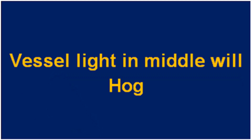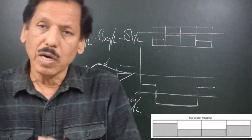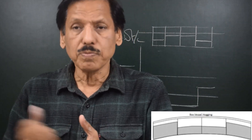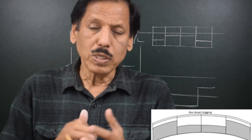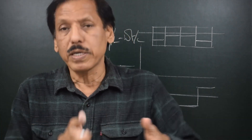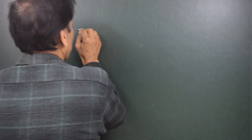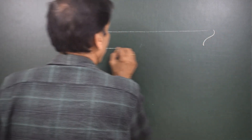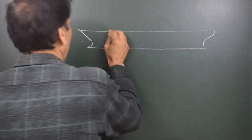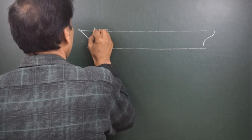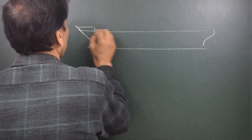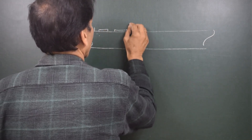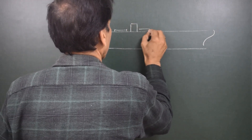Now we will talk about how these strength curves are derived in a ship-shaped vessel — what they used to do in the past and what can be done today. First of all, let us talk about the weight curve. The ship has a forecastle, various holds, the mast house, and accommodation.